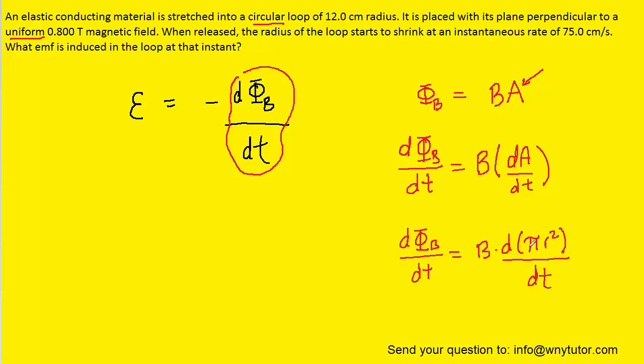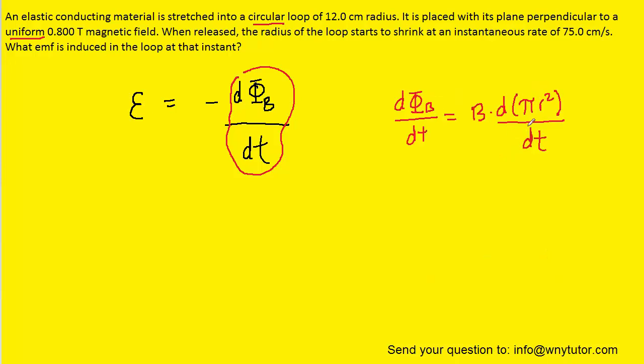So now we're ready to calculate the derivative of pi r squared with respect to time. We'll move it up here on the top of the screen. To calculate the derivative of pi r squared with respect to time, we're going to use a power rule as well as a chain rule.